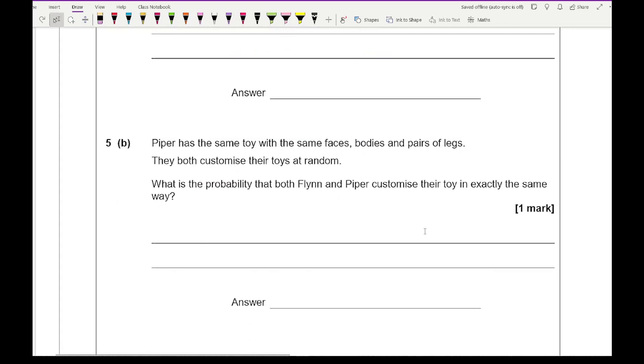Then for 5b, it says Piper has the same toy with the same faces, same body and same pair of legs. They both customize their toys at random. What is the probability that both Flynn and Piper customize their toy in exactly the same way? Well for this, if you imagine that if you pick one of those two people, so let's just go for Flynn, he's made a choice. Now the probability that Piper picks the exact same combination, well she's got a potential of 240 choices and the right one was only one combination, so therefore the answer is going to be 1 over 240. It's not a case of the question asking what probability of both of them having the same. It's a case of what's the probability of one person picking the same as another. So the first person already picked theirs, so you don't need to multiply 1 over 240 by another 1 over 240. It's more of a case of what's the probability of one person having the same as another.